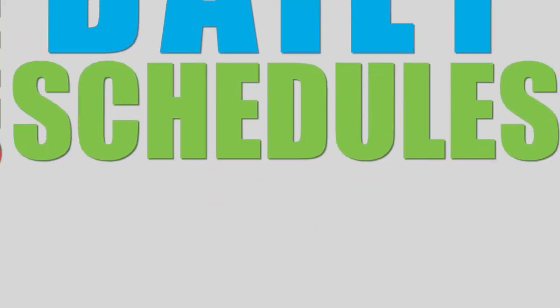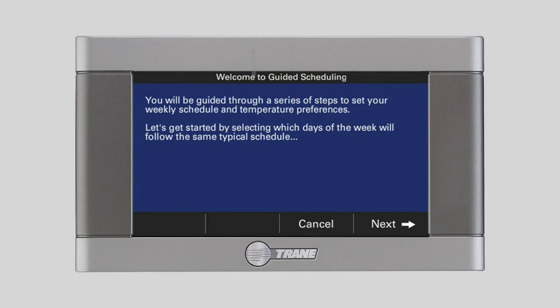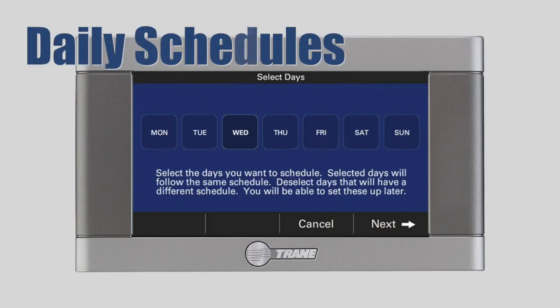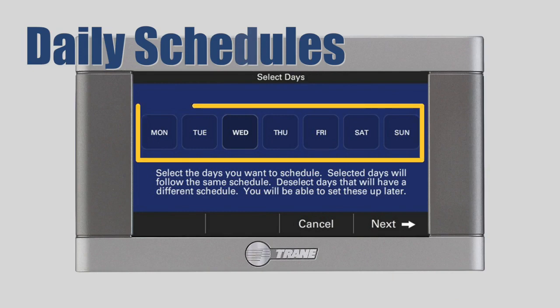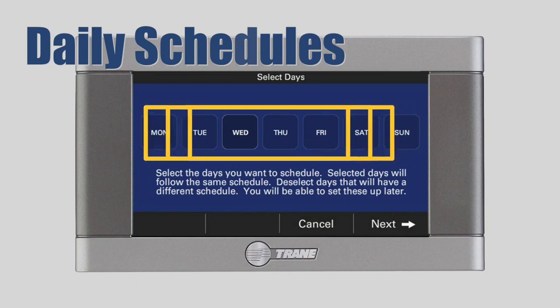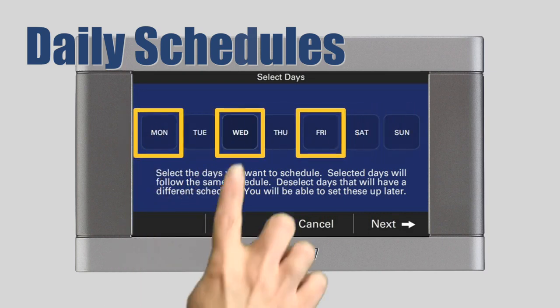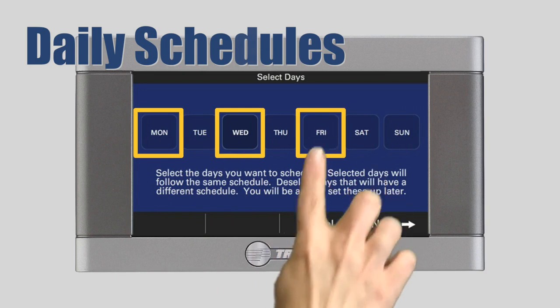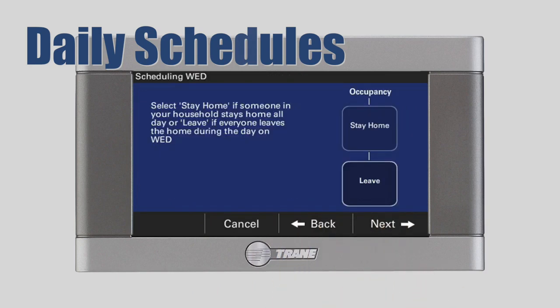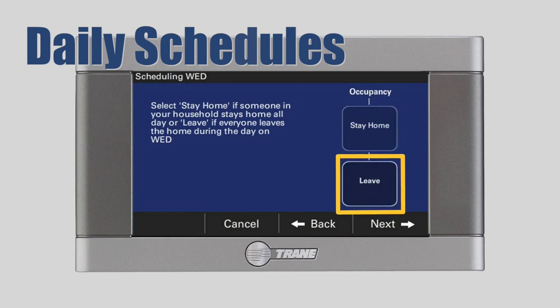Setting Daily Schedules. The first step in setting up your customized climate control schedule is to select the days you want to program. Select all the days that will have the same schedule. We'll come back later and schedule the other days. For this demonstration, let's select Monday, Wednesday and Friday and press Next. Now, we need to tell the control if someone in your household stays home all day or if everyone leaves during the day. Make your selection and press Next.